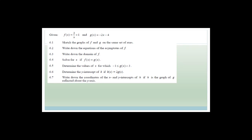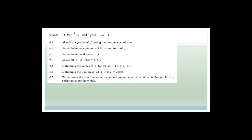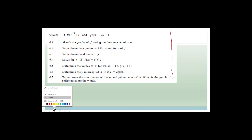Let's get back to paper one — this is a continuation of a paper one exam paper, question six. It says f(x) = 3/(x+1) and g(x) = −2x − 4. Sketch the graphs of f and g on the same set of axes. Let's start with g(x) = −2x − 4, which passes through the y-value of −4.